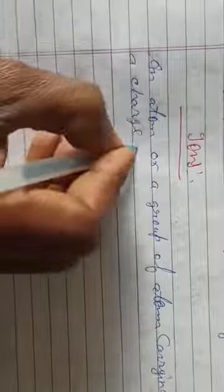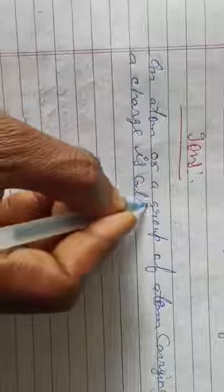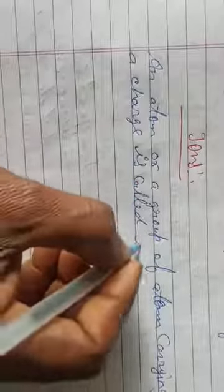carrying a charge is called ions. Koi bhi atom ya group of atoms jis ke upar charge hoon, unko hum ions kehate hain.